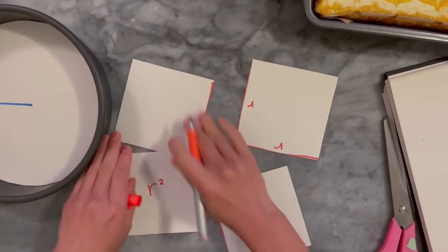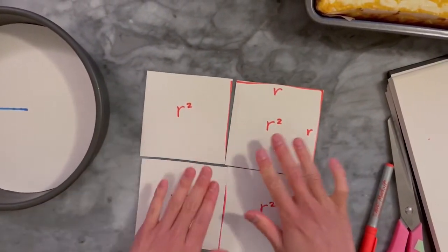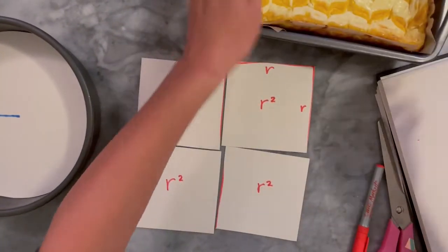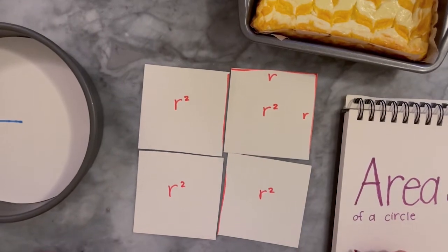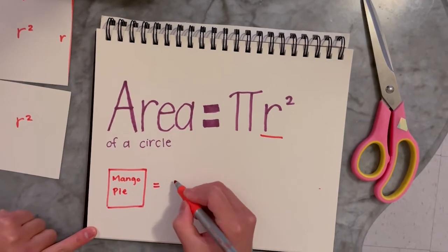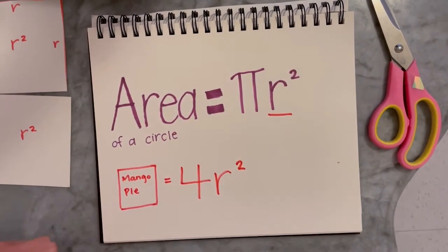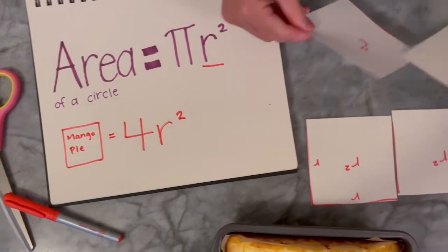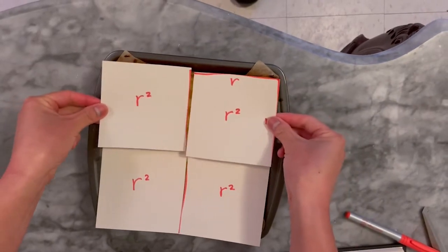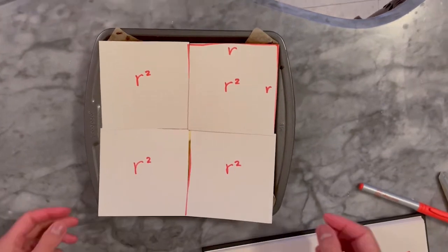We can call the area of each of these smaller squares an r squared. How many r squares cover this pie? Four r squares! So this square cake tin — my mango pie — is equal to four r squares. I can show you that by laying it on top. It's not perfect, not exact, because it's pi after all, but it's four r squares.